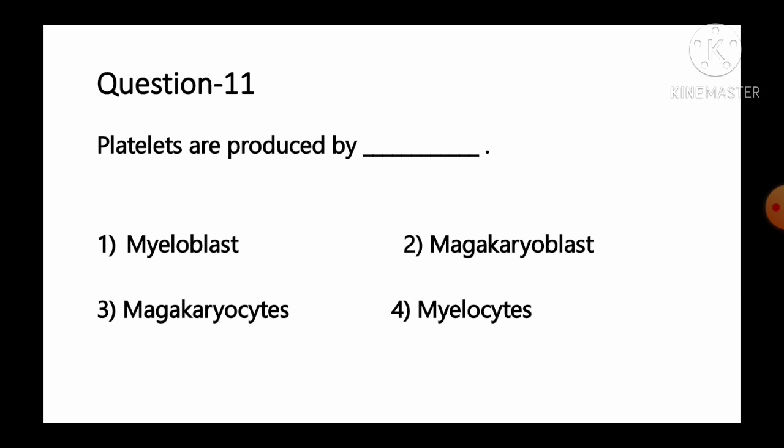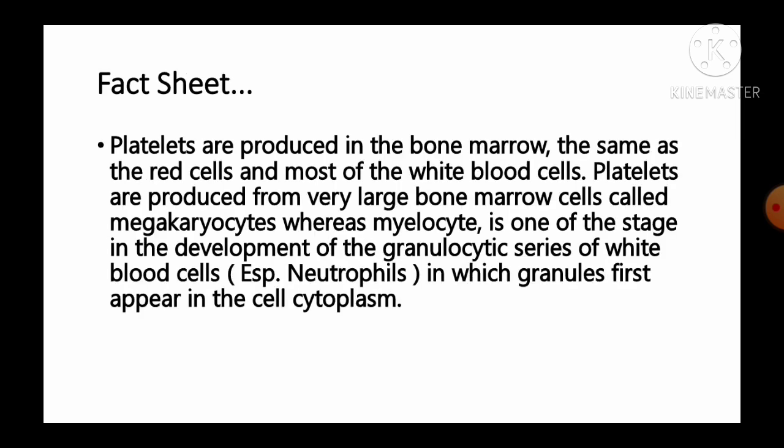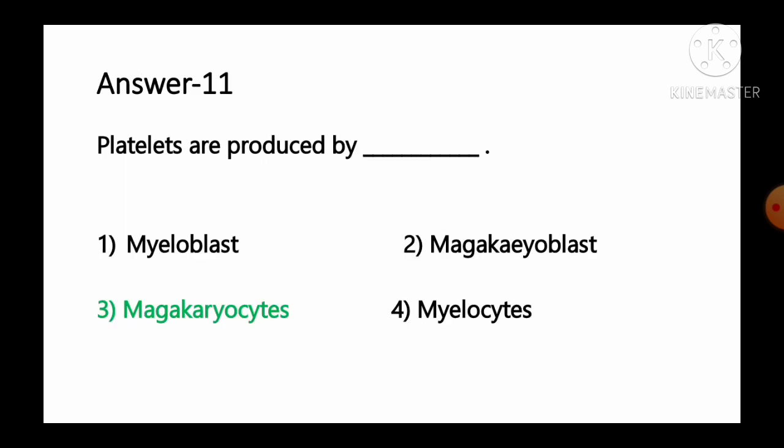Question number 11: Platelets are produced by — option 1 myeloblast, option 2 megakaryoblast, option 3 megakaryocytes, option 4 myelocytes. Platelets are produced in the bone marrow from very large bone marrow cells called megakaryocytes. Myelocytes are a stage in the development of the granulocytic series of white blood cells, especially neutrophils. So option number 3, megakaryocytes, is the correct answer.